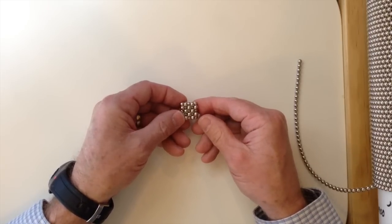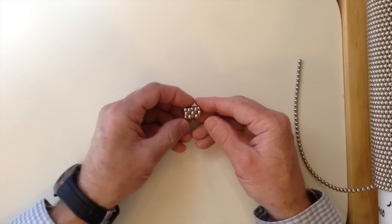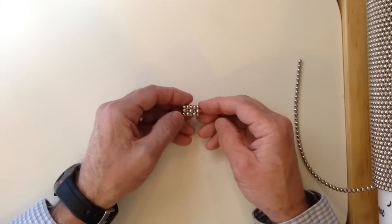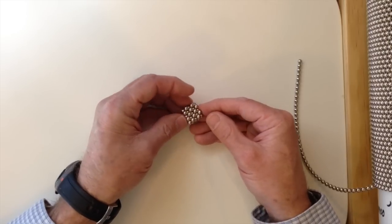Now what you have is a diagonal wall that has a thickness of three magnets. One, two, three. The top looks the same as the bottom.